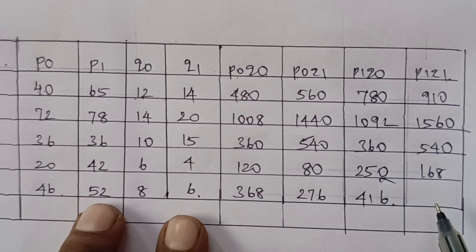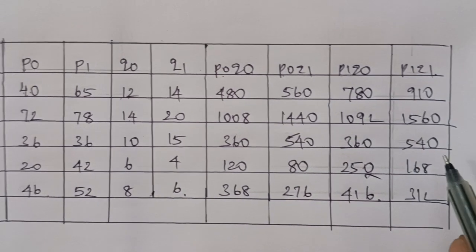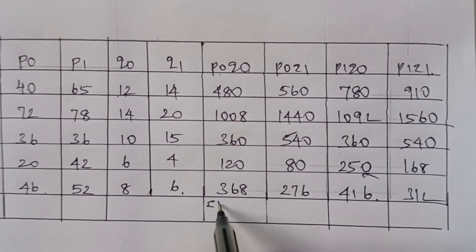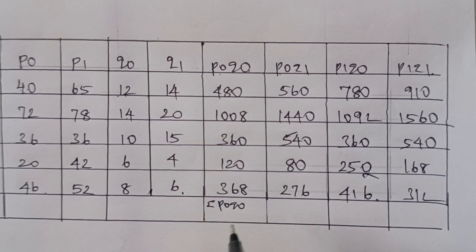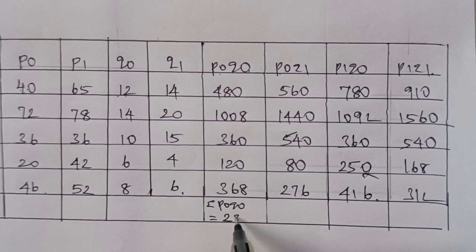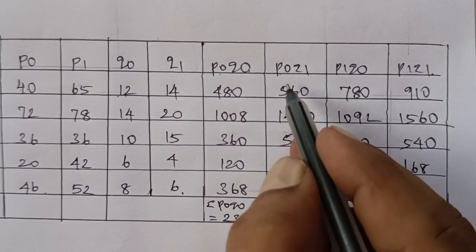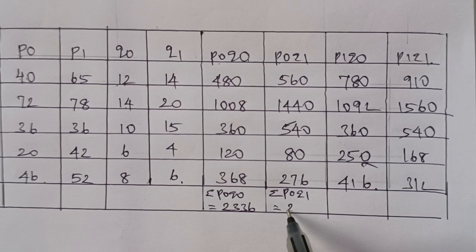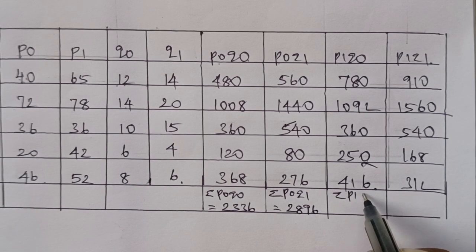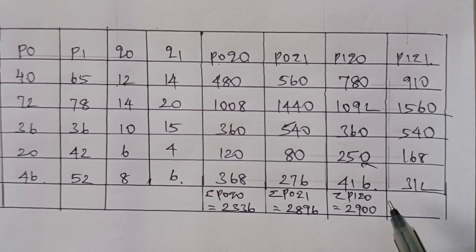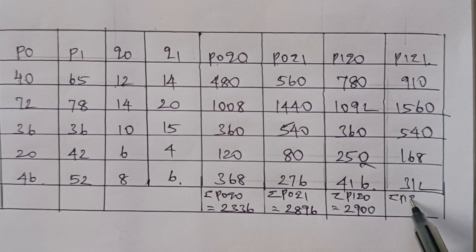62 into 6. Now add total to total. Summation P0Q0 — add total. Summation P0Q1 — add value: 2896. Similarly, P1Q0 — add value. P1Q1 and P1Q0 — add value.